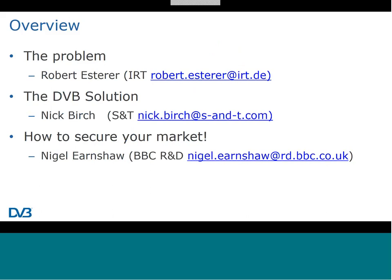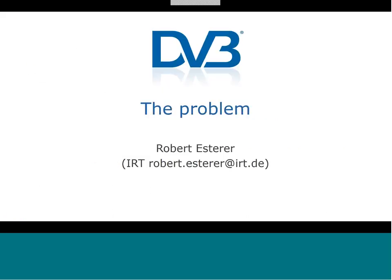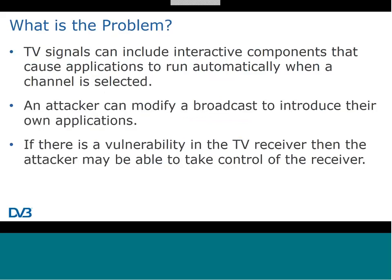Thank you, Peter. Let me start with the problem we solved so that everybody can understand why we did this work and why it was necessary. The basic issue is that TV signals can currently carry interactive components such as HbbTV, which can run automatically on smart TVs. These broadcast signals are currently not authenticated, meaning they can be modified on the air by an attacker without any means of detecting the modification.